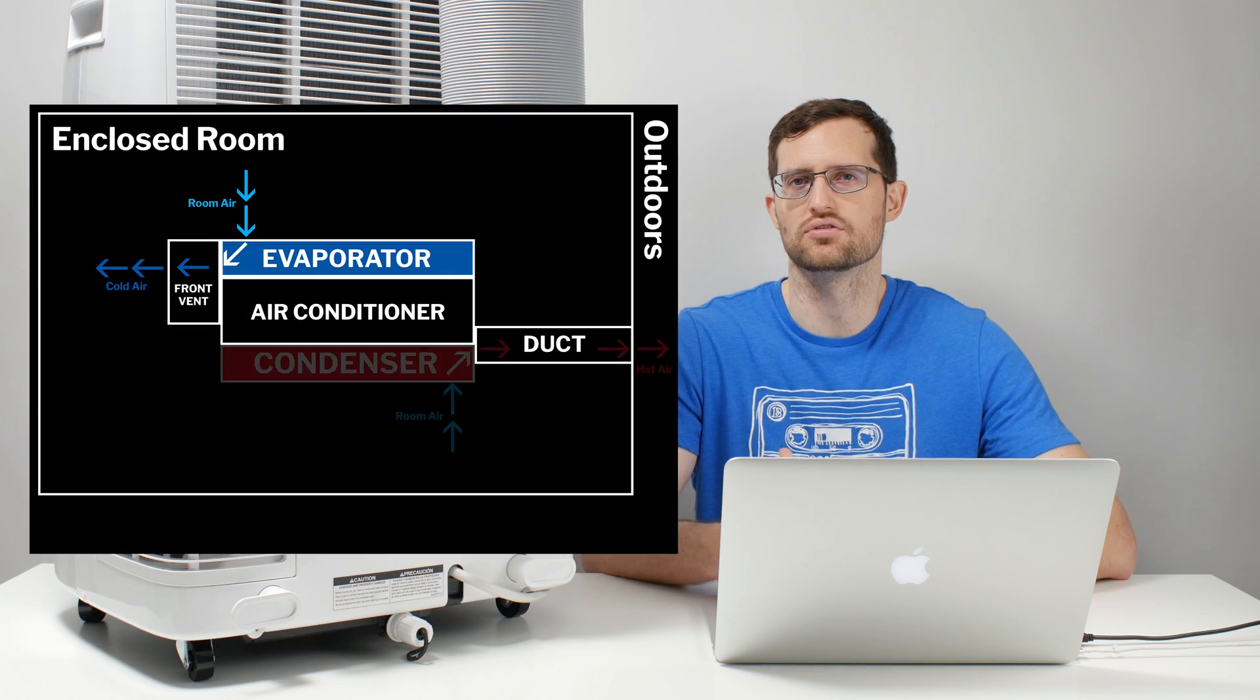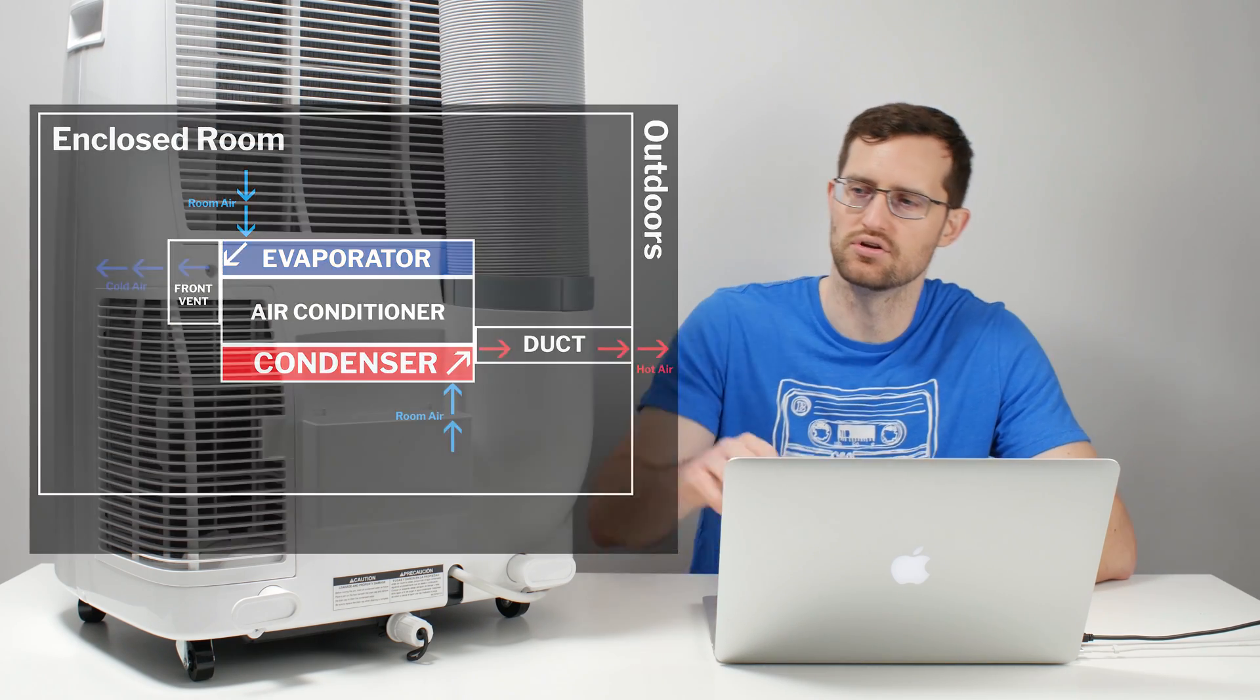The other source of heat is a little bit more difficult to understand. It involves the outdoor air getting pulled into the room. How this works is the portable AC unit pulls in air to cool its condenser. On the back of the unit, you can see it right here.